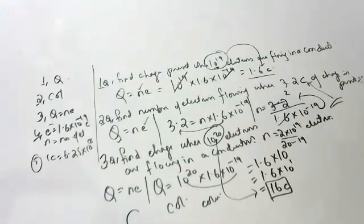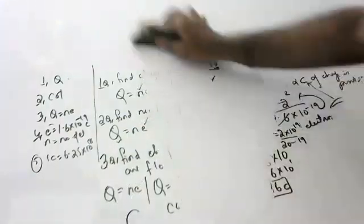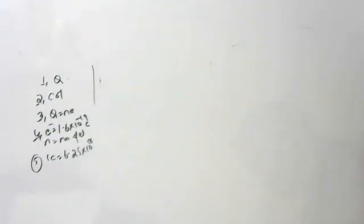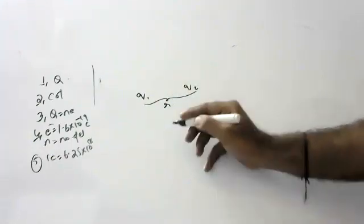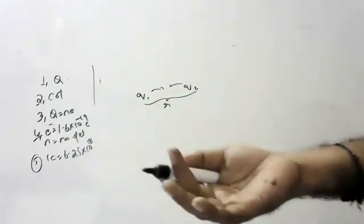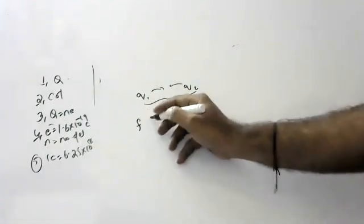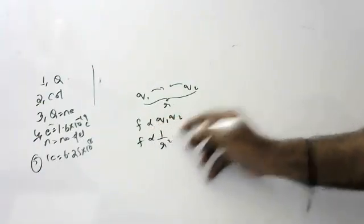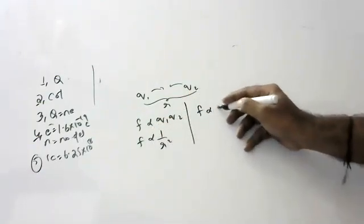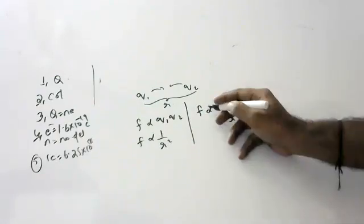Coulombs is the unit of charge. Now a small topic that is not in your syllabus, just for awareness: when two charges Q1 and Q2 are separated by a distance R, the force between them — which may be attraction or repulsion — is directly proportional to the product of their charges and inversely proportional to the square of the distance between them. Combining both, force is proportional to Q1 times Q2 divided by R squared.